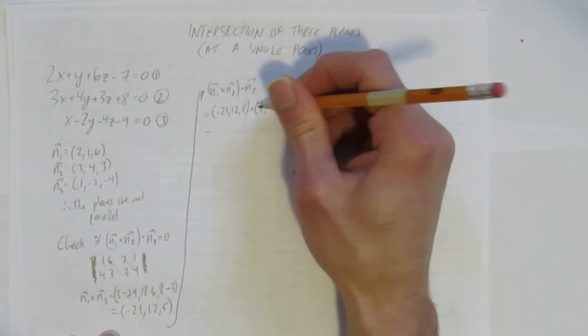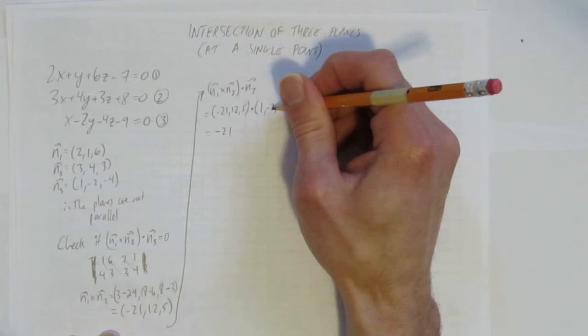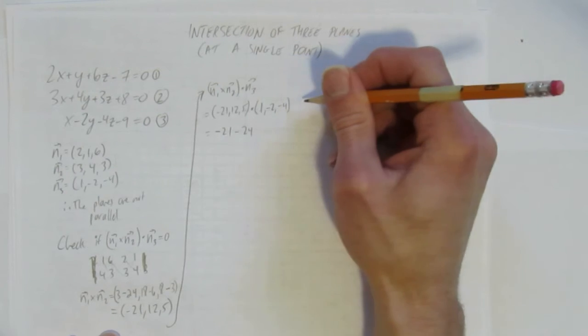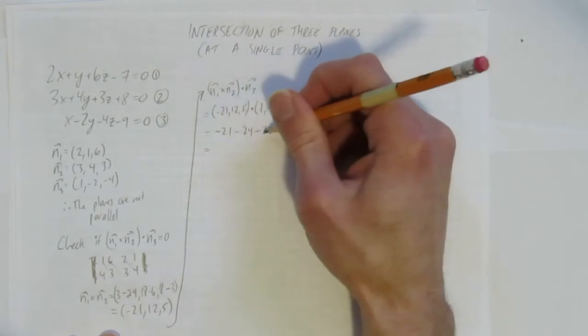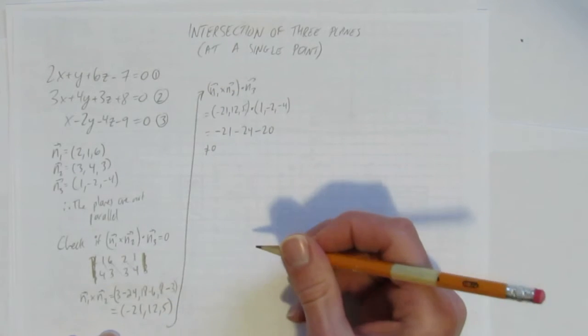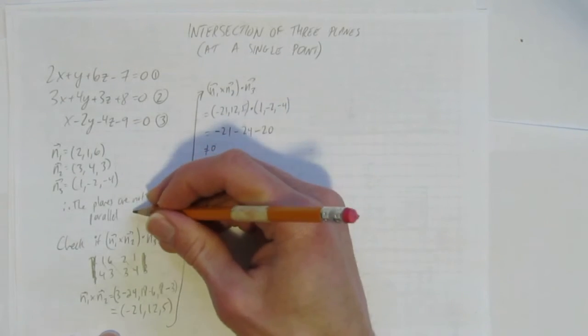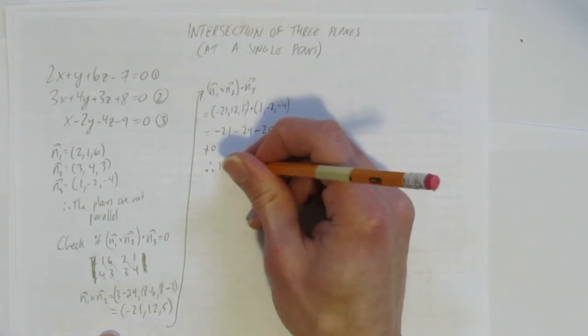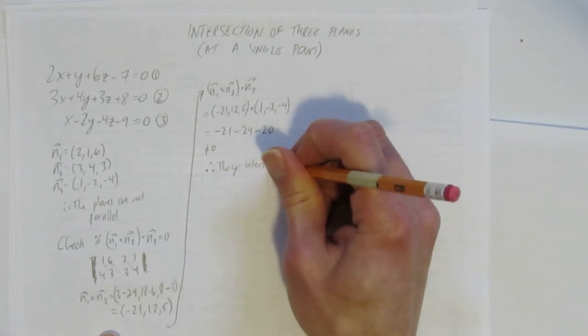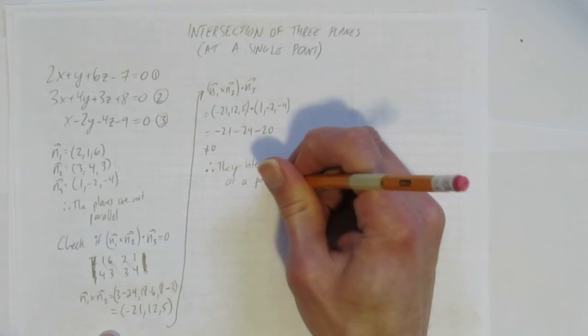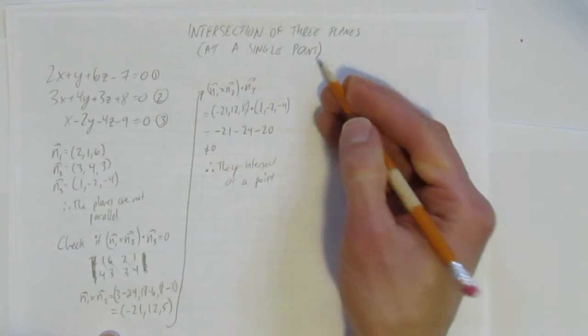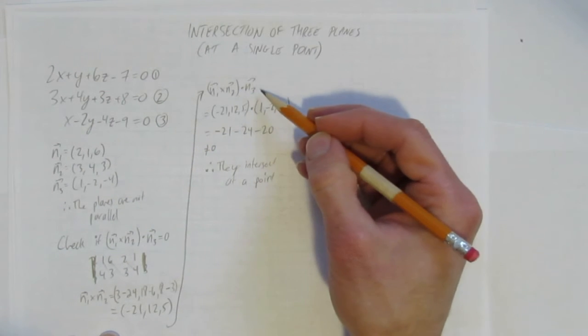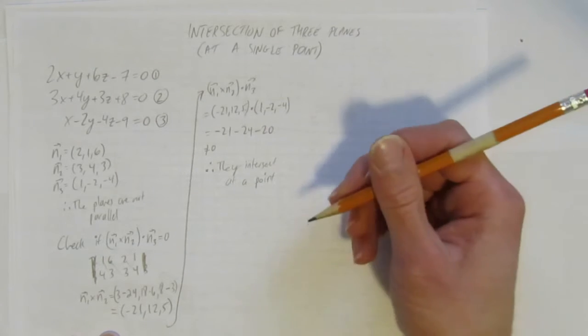So multiply these two together, you get -21, multiply these two together, that's -24, multiply these two together, and you get -20. Oh good, it is clearly not zero. You don't even have to write the number, just write, hey, it's not zero, which is good. Therefore, that tells us, since we know they're not parallel and we know their normal's triple scalar product is not zero, therefore, they intersect at a point. That's how I gave this video its bracketed title here.